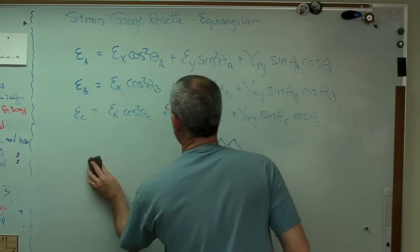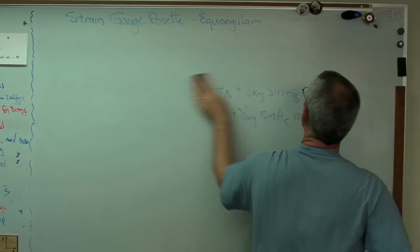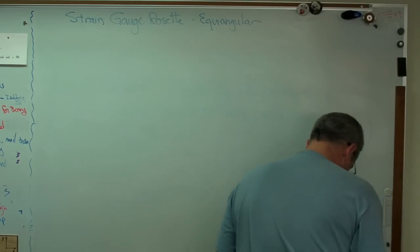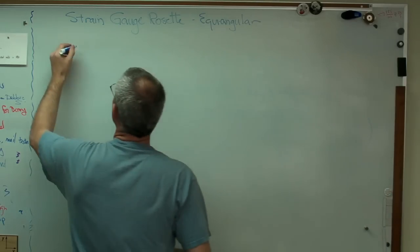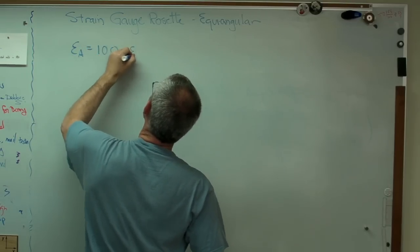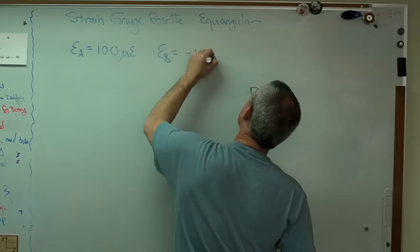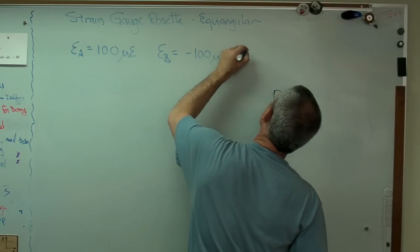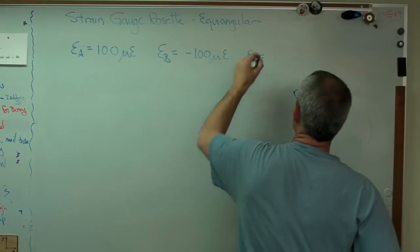Let me give you some numbers now to work with. I'm always happiest when I'm working with numbers. Being an engineer and not a mathematician, I guess maybe that's my bias. So let's say that epsilon A is 100 microstrain, epsilon B is minus 100 microstrain, and epsilon C is also 100 microstrain.